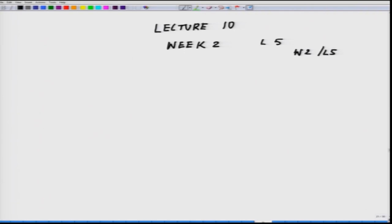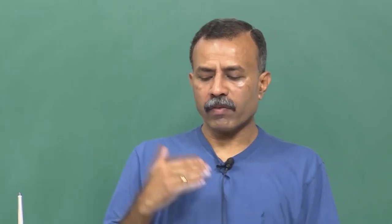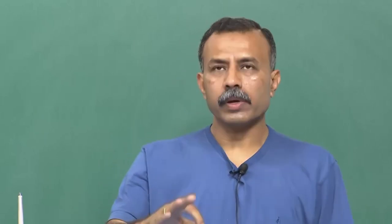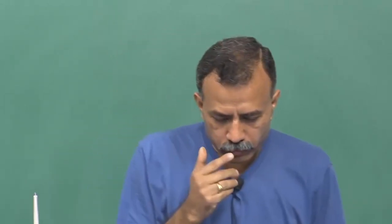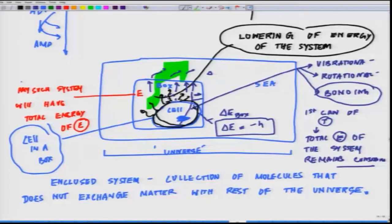We will be discussing some of the thermodynamic parameters. Coming back to where we left in the last class, I gave you the analogy of the box. When the molecules inside are going through vibrational, rotational, spin and all sorts of motion, they generate a lot of heat, and that heat slowly gets dissipated — the system eventually lowers its energy. The change in energy is essentially the heat which is lost to the surrounding.